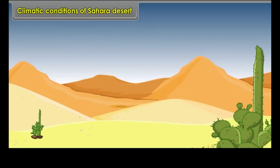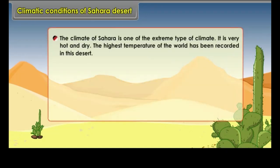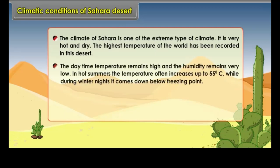Climatic conditions of the Sahara Desert: The climate of Sahara is one of the extreme type. It is very hot and dry. The highest temperature of the world has been recorded in this desert. The daytime temperature remains high and the humidity remains very low. In hot summers, the temperature often increases up to 55 degrees Celsius, while during winter nights it comes down below freezing point.